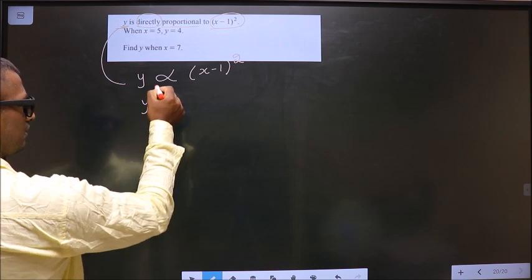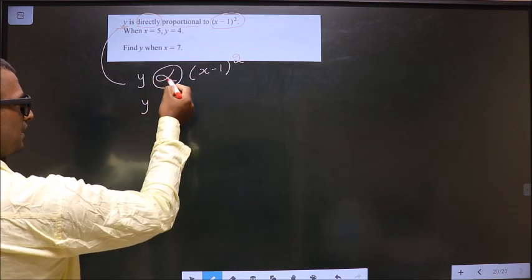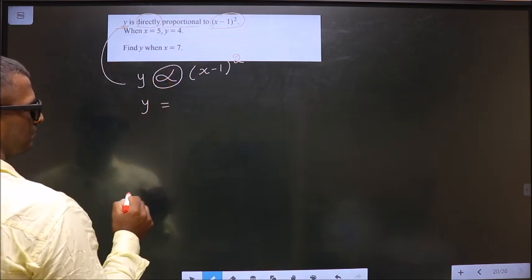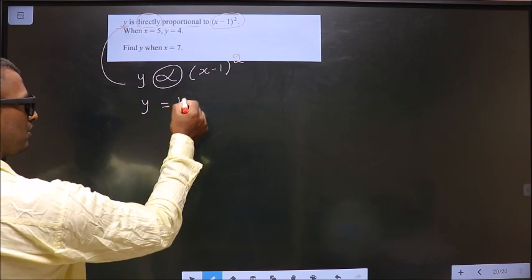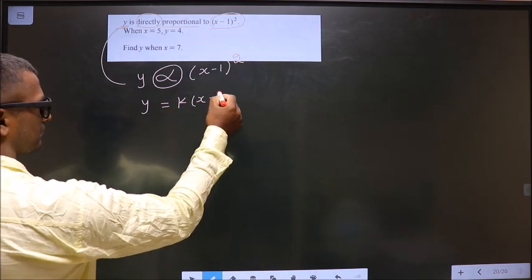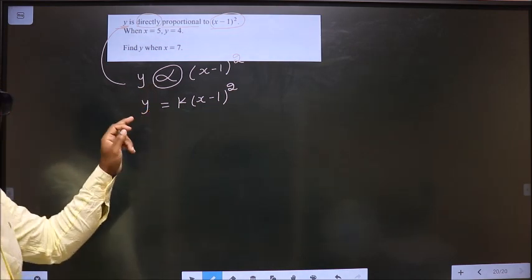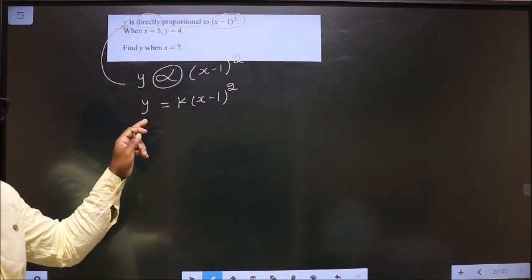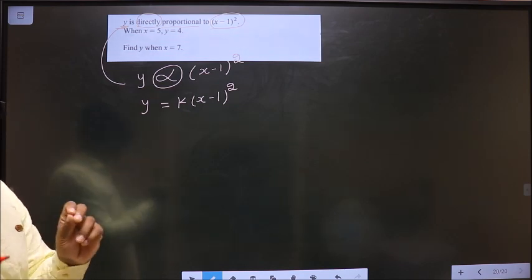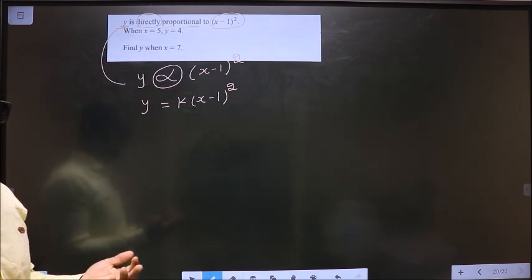Now, to replace this proportionality symbol with equal to, we have to put a constant k. Whenever you are replacing proportionality with equal to, you should put a constant k. It is a rule.